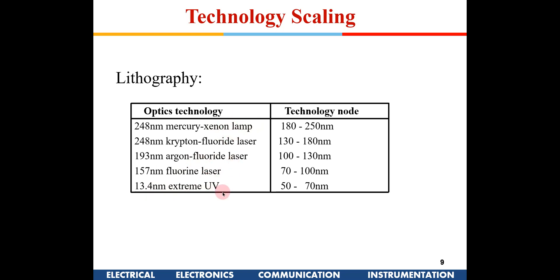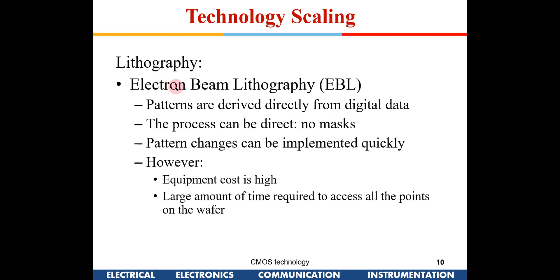We started with mercury-xenon lamps and now use 13.4 nanometer extreme ultraviolet (EUV) lithography. There is also electron beam lithography, where patterns are derived directly from digital data with no mask required. Though costly, electron beam lithography is what will be used for lower technology nodes like 7 nanometer and 5 nanometer.